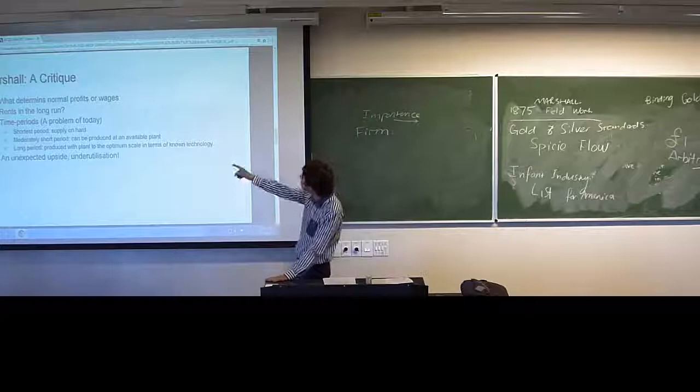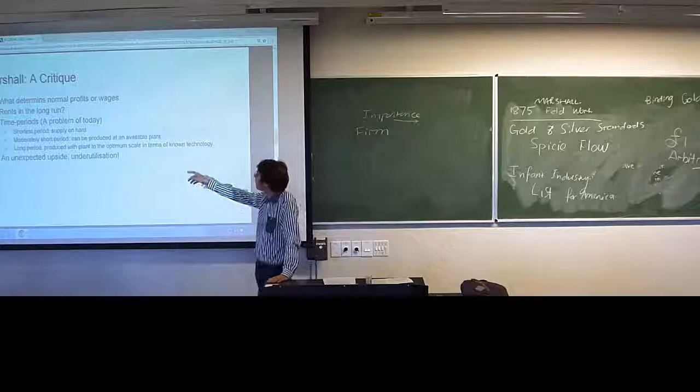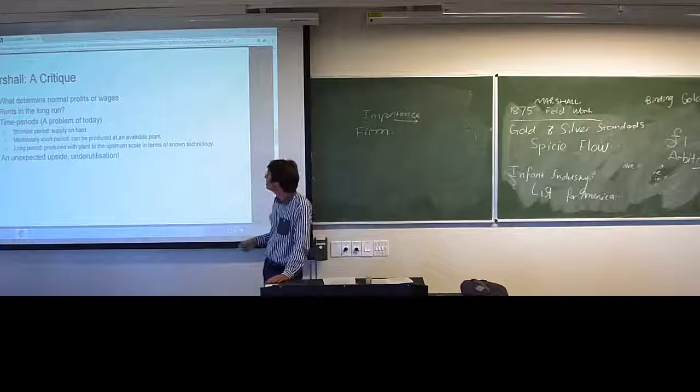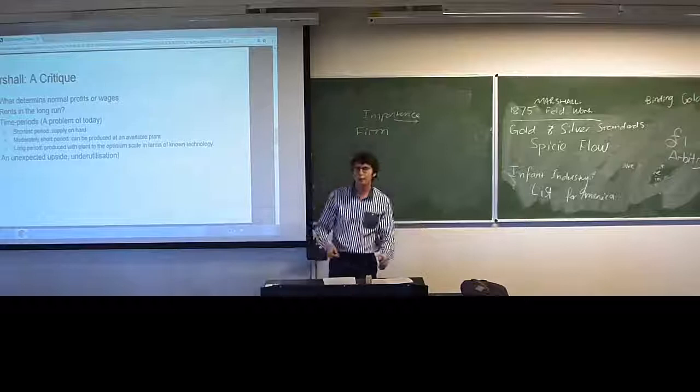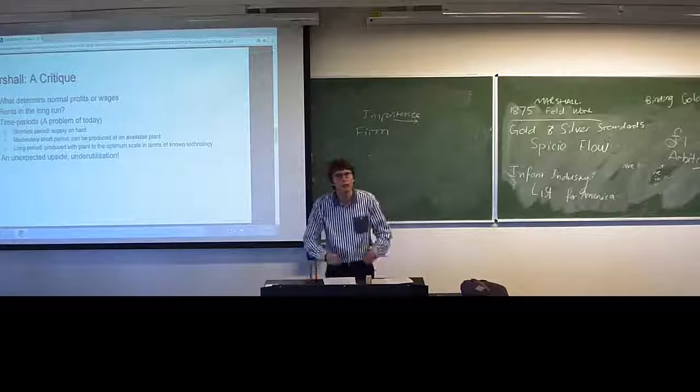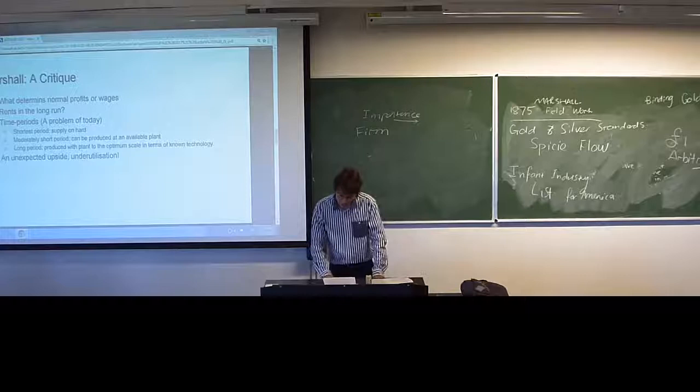Marshall came up with the first sort of timeframe distinctions. We need to find the shortest period — the supply on hand — the short period which can be produced at an available plant, and the long run which we are already used to. Do you see how much this is informing our modern experiences of economics, despite it being particularly interesting?